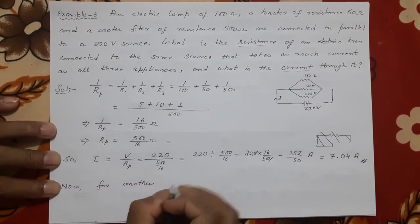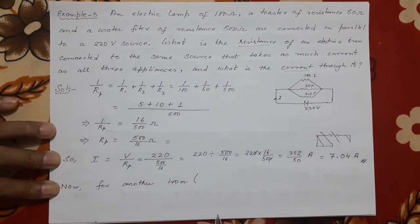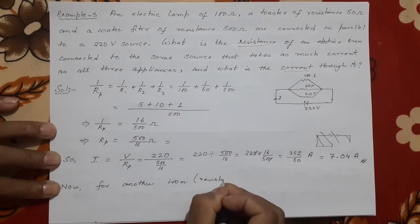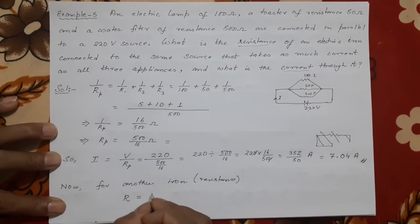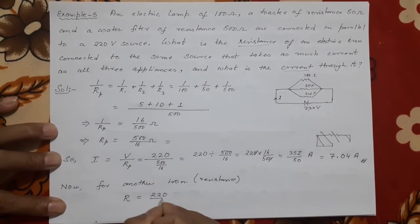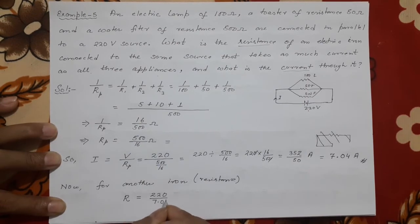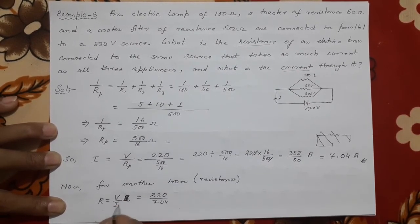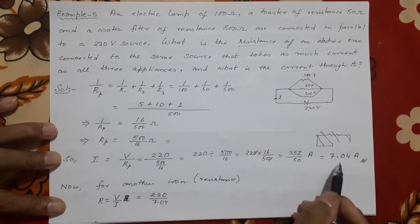Now for another iron—iron means here what is that electric iron? For us it is resistance only, new resistance. So what will be that R? Voltage will not change, 220. Current will be 7.04. I think I should write the formula: R = V/I first.